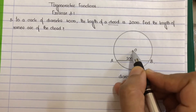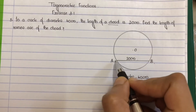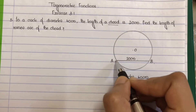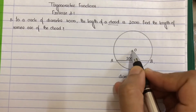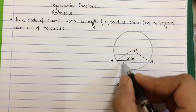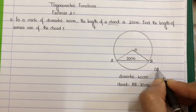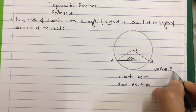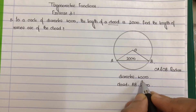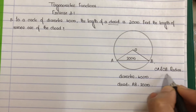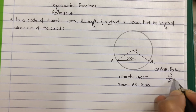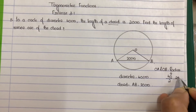Join OA and OB. OA and OB are the radii of the circle. Diameter is equal to 40 centimeters. Radius equals diameter divided by 2, that is 40 by 2, which equals 20 centimeters.